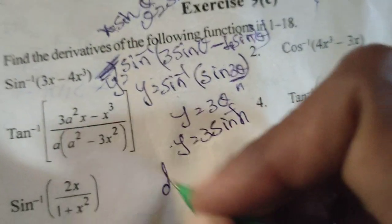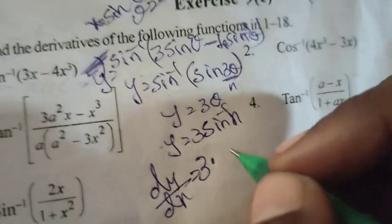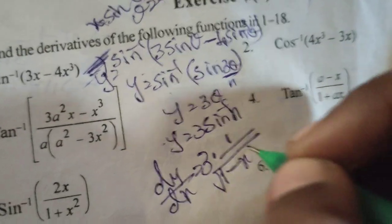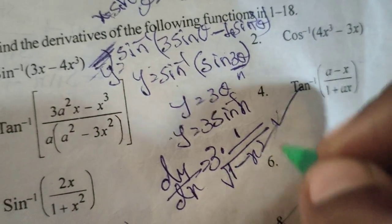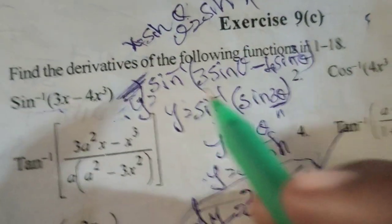Now differentiate. Therefore, dy/dx equals 3, the constant, times the differentiation of sine inverse x, which is 1 over root of 1 minus x square. This is the differentiation of the given function sine inverse of 3x minus 4x cube.